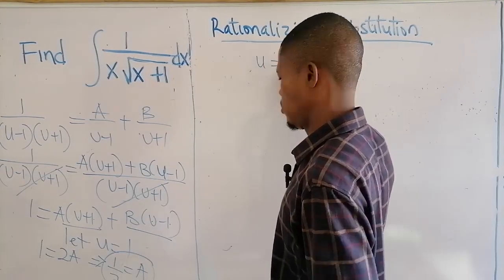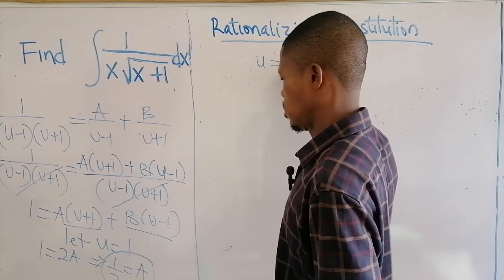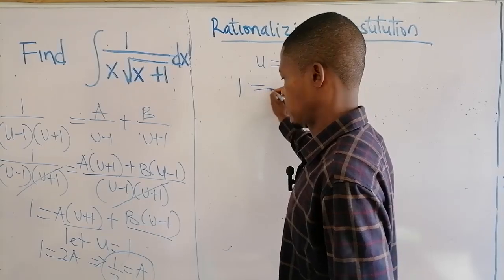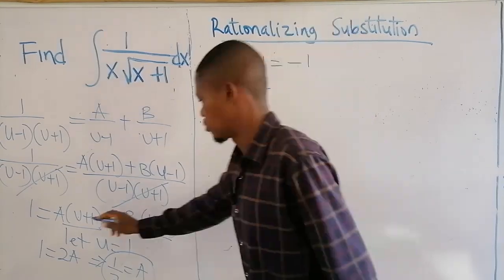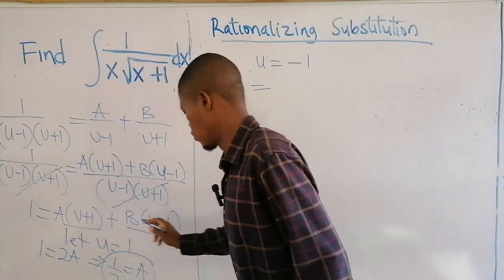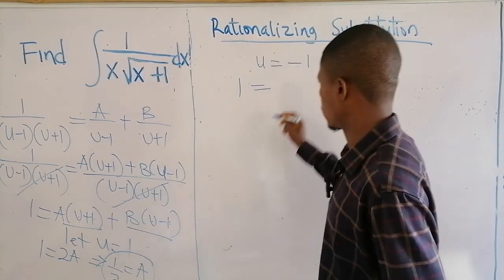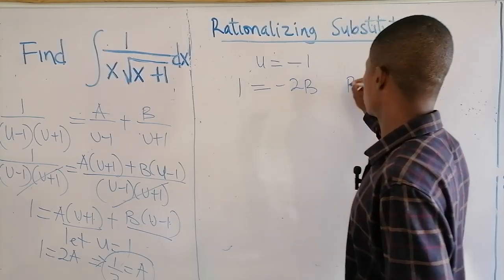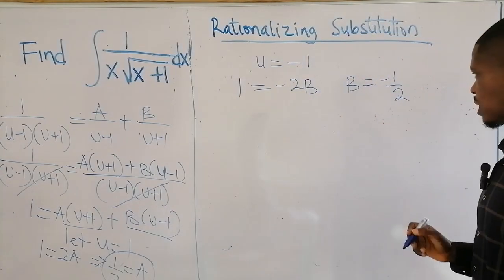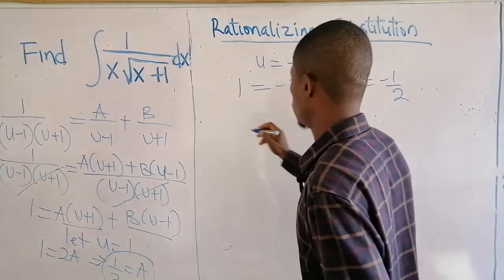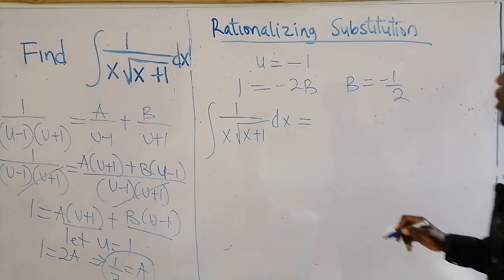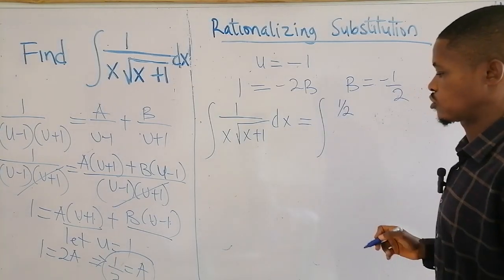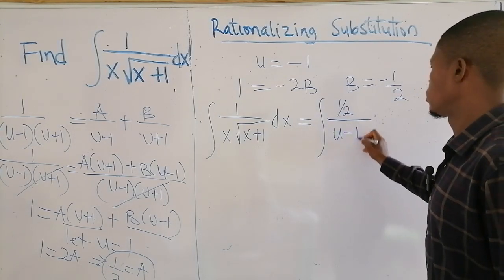Also, let u equal minus 1: the A term cancels, and we get 1 equal to B times minus 2, so B equals minus 1/2. So the partial fraction decomposition is (1/2) times 1 over (u minus 1) minus (1/2) times 1 over (u plus 1).